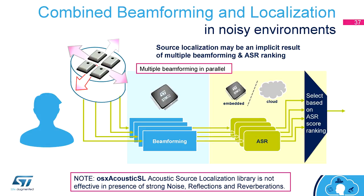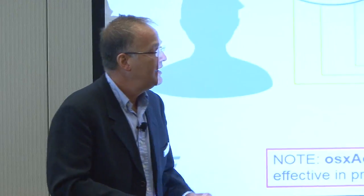After each beamforming, we perform ASR. So on a single MCU we run four microphone connections, four beamforming routines, and four speech recognition instances, then select the single beamforming channel giving the best speech recognition score. In this way, even in a noisy environment, we can identify and use the right beamforming channel. Of course, in this case we are going to use one of the high-performance STM32 processors, an STM32F7 or even the upcoming STM32H7, which is even more powerful.